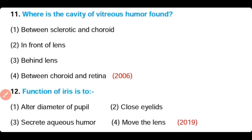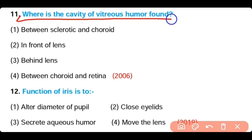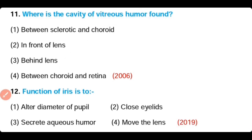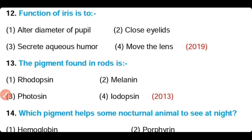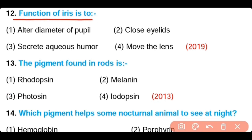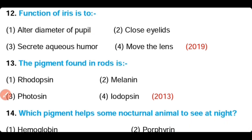Question number eleven: Where is the cavity of vitreous humor formed? (a) between the sclera and choroid, (b) in front of the lens, (c) behind the lens, (d) between the choroid and retina. The answer is option three — the vitreous humor cavity is present behind the lens. Question number twelve: The function of iris is to (a) alter the diameter of pupil, (b) close the eyelids, (c) secrete aqueous humor, (d) move the lens. The answer is option one — the iris helps to alter or change the diameter of the pupil.